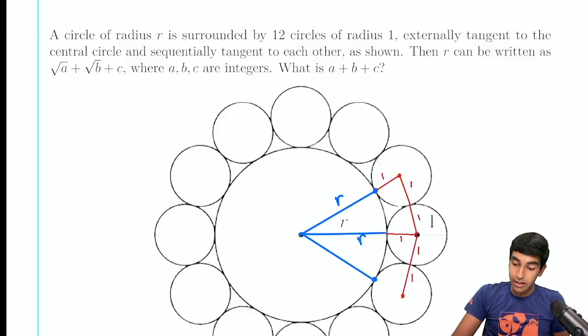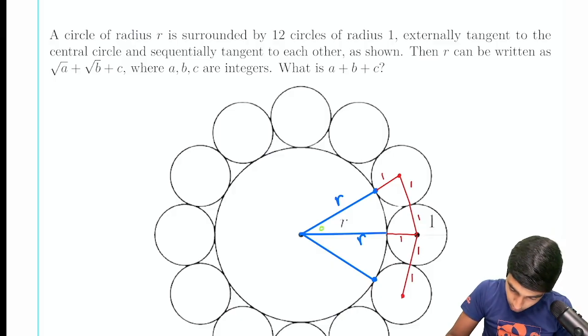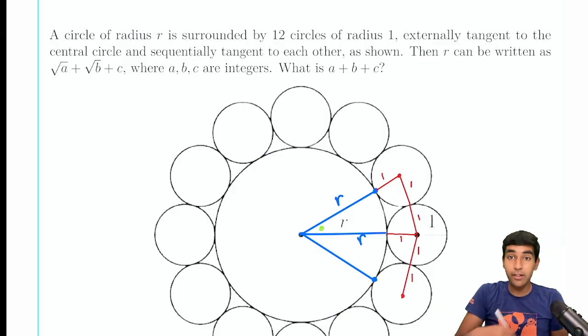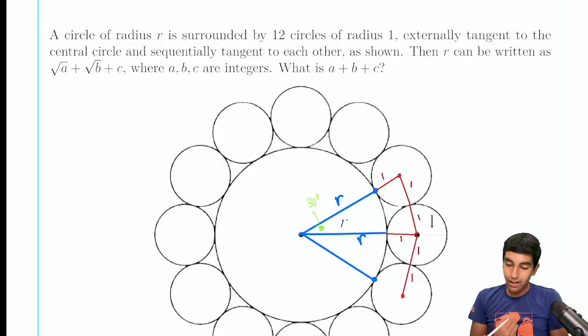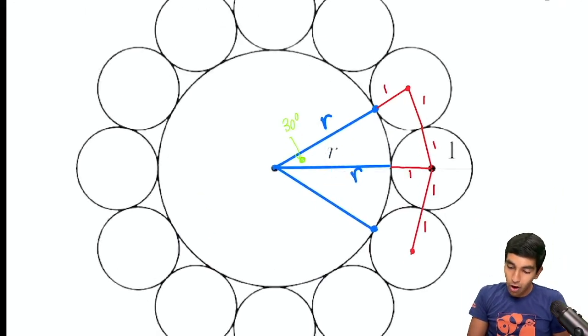And that means that if there's 12 of these sides by symmetry, this angle is going to be 360 divided by 12. That's 30 degrees. So that angle is 30 degrees. And now we have to find r.